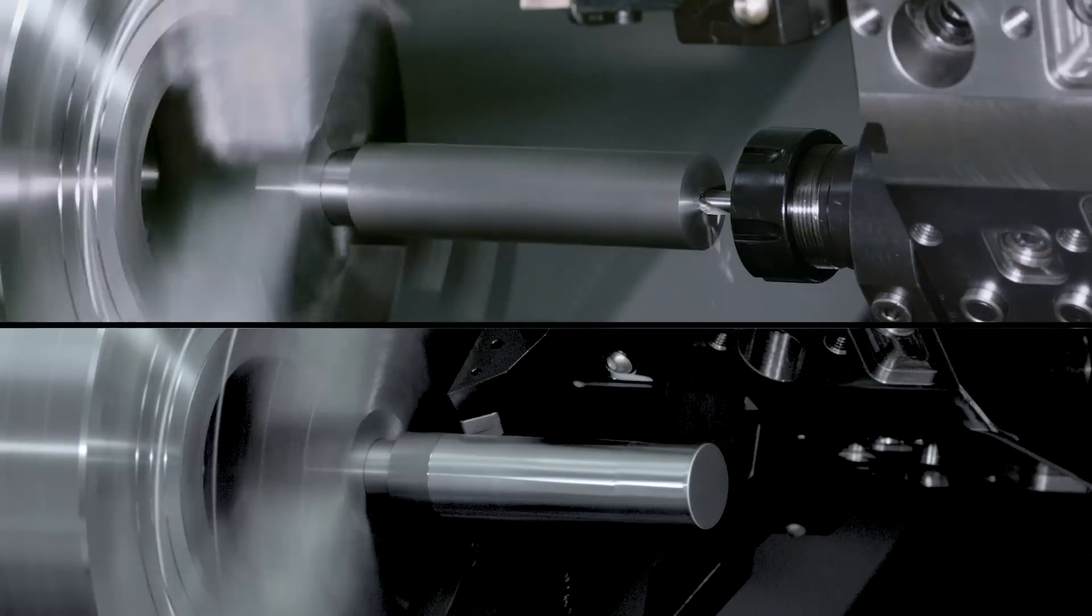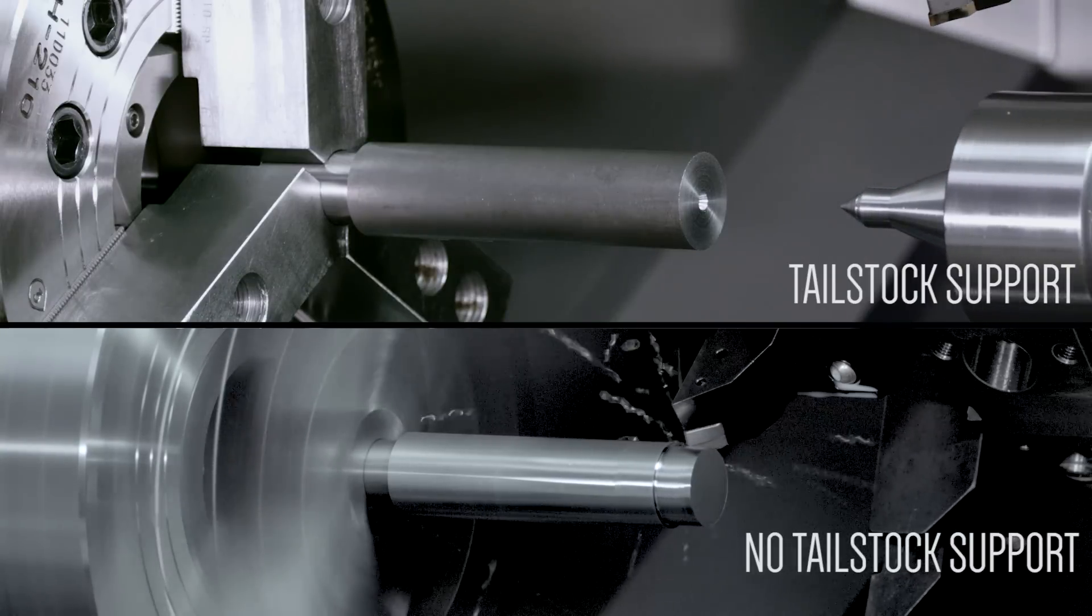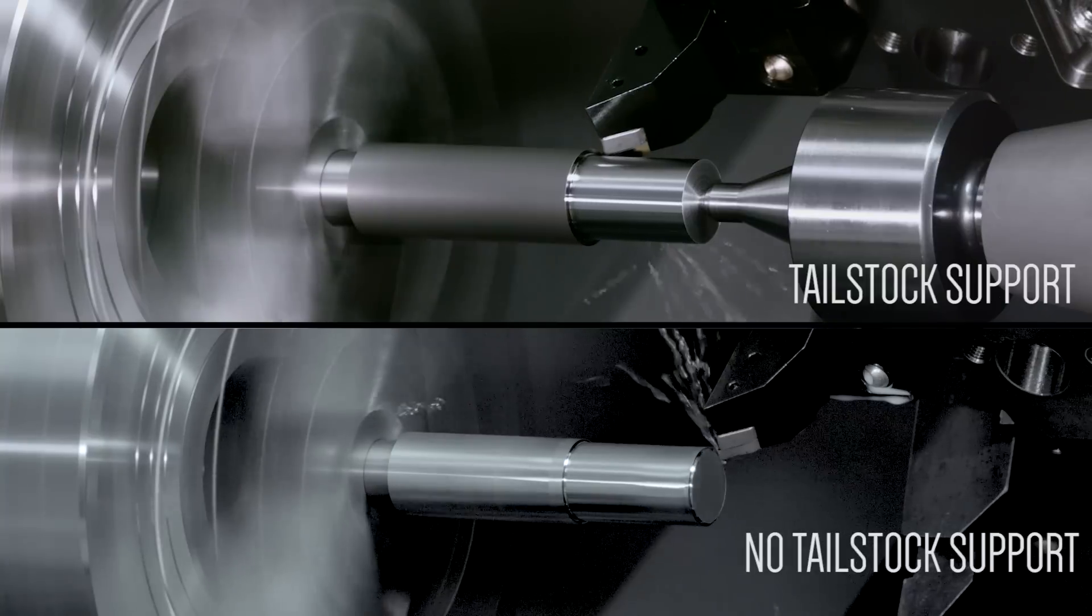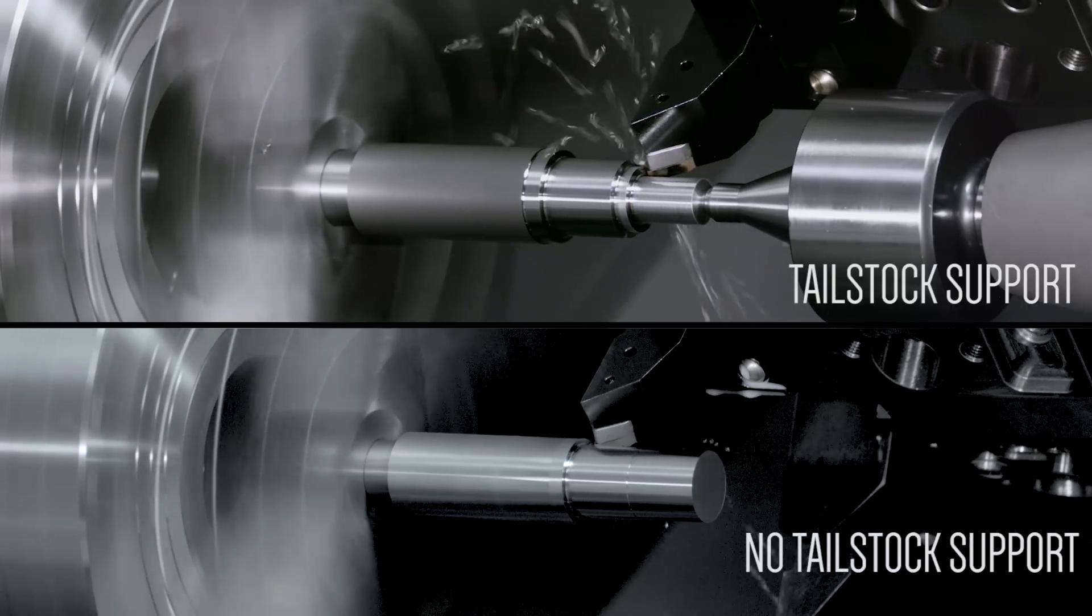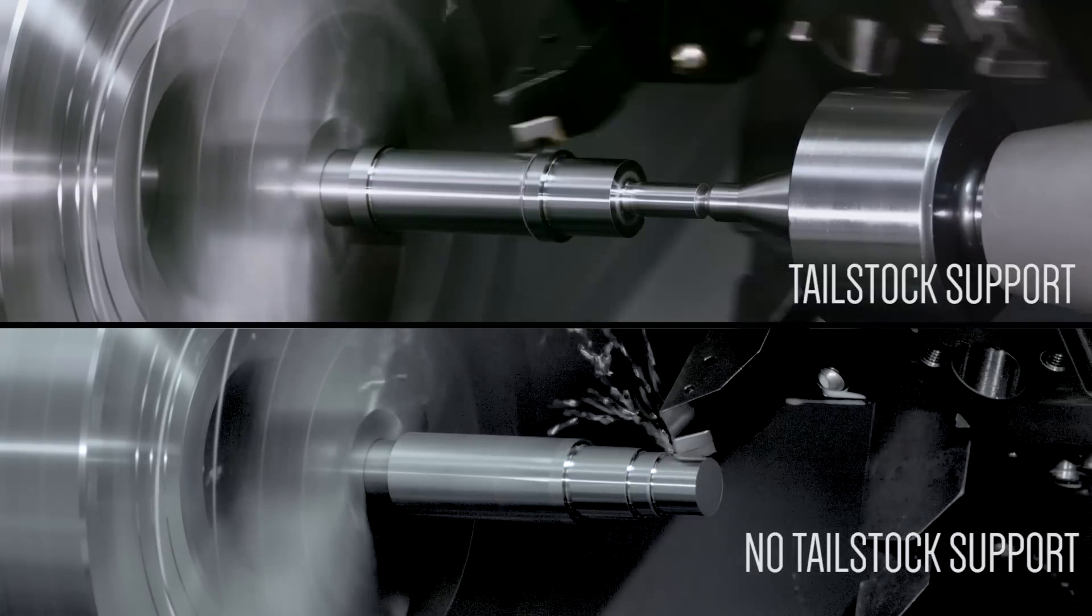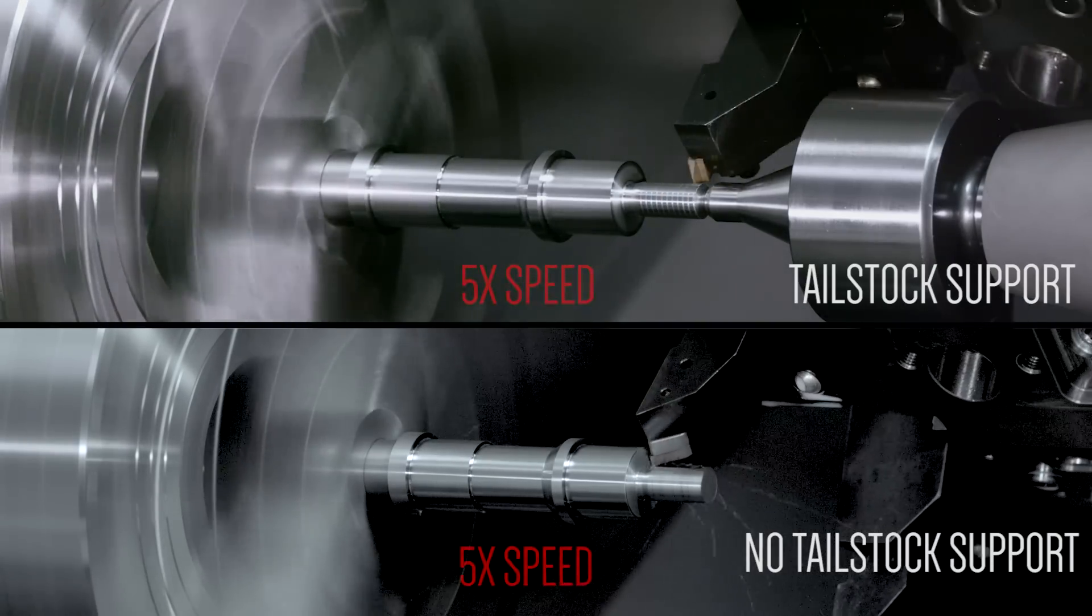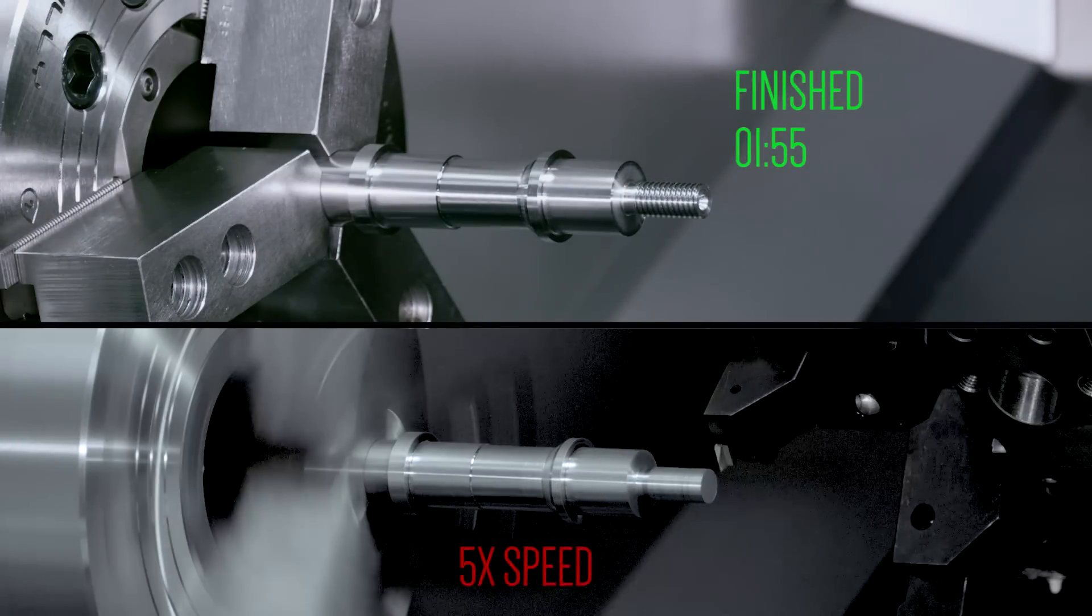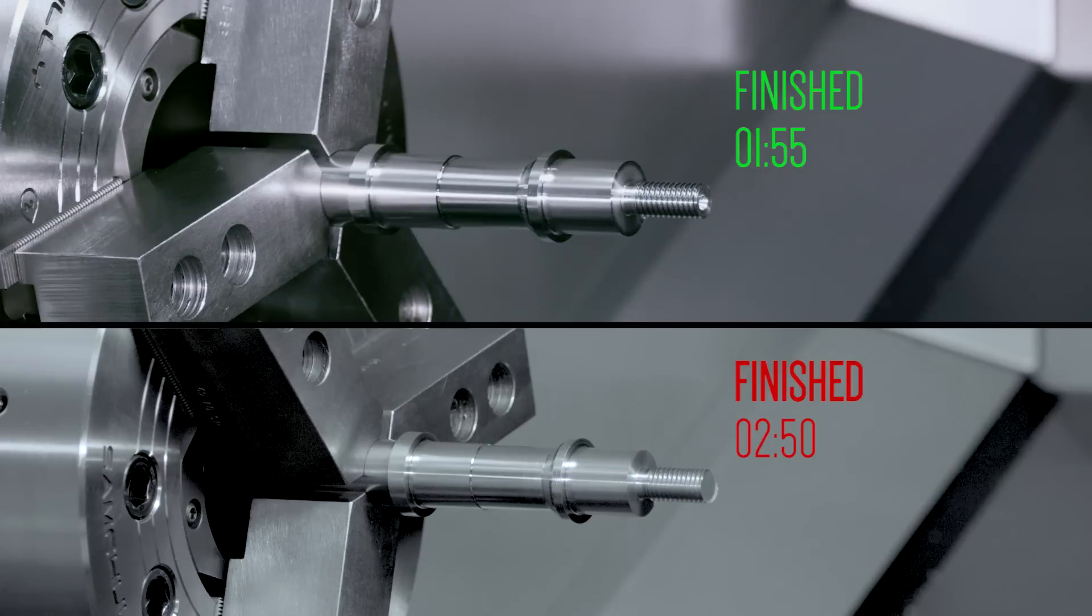Each of these parts are running with speeds and feeds optimized for the amount of support available. Machinists sometimes worry that they'll lose time waiting for the tailstock to clamp their part, but tailstock support usually allows higher speeds and better finishes. The tailstock supported part is able to run considerably faster since it is held in a much more rigid state. As our part reaches completion, we can see that even though the tailstock supported part started cutting after the unsupported part, in the end, it finished well ahead, with a lower cycle time.